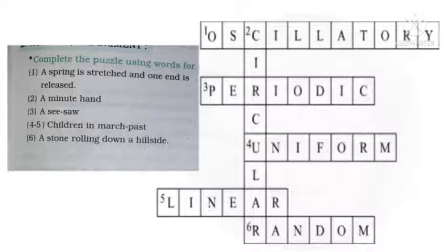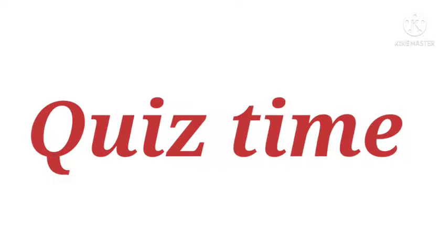Now here is another question, you have to complete this puzzle. The answer has been written. First one horizontal is oscillatory, second vertical is circular, third periodic, fourth uniform, fifth linear, and sixth is random. Hope you have understood.